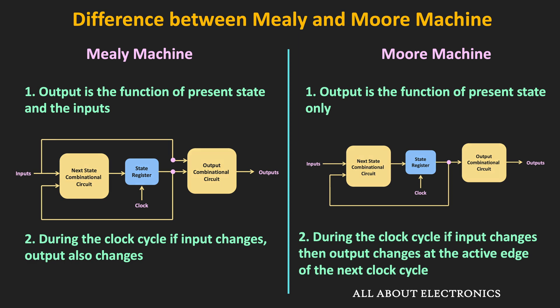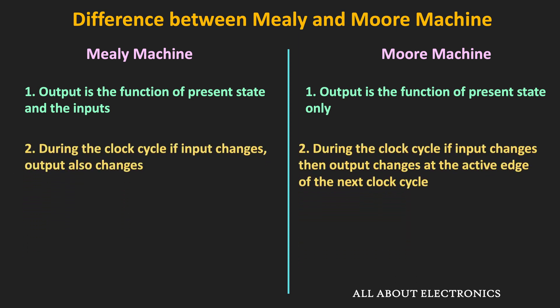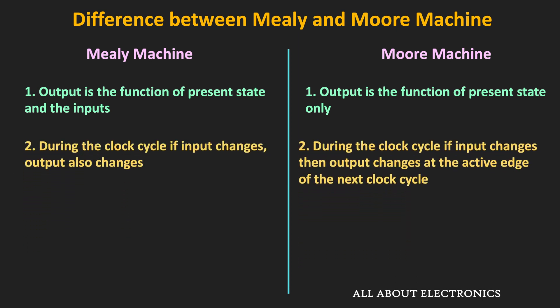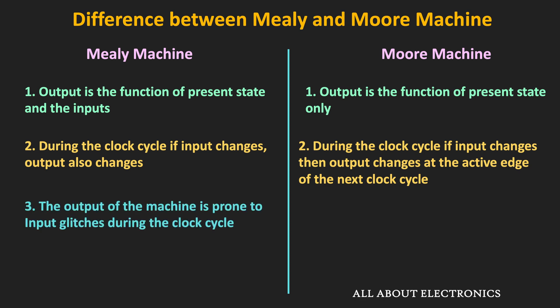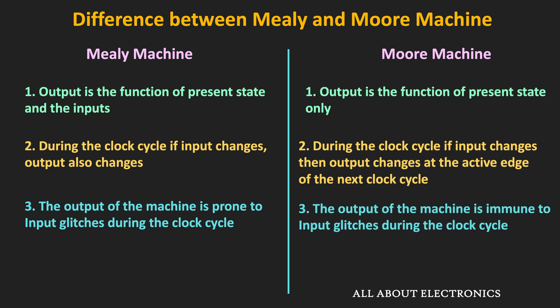In the Mealy machine, since the output can change during the clock cycle, it is more prone to input glitches during the clock cycle. While the Moore machine is more immune to such input glitches.